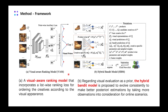In our paper, we present a novel framework to tackle this problem. There are two major components in our model. One is the visual-aware ranking model, which we call VAM. We present a novel convolutional network with a listwise ranking loss to select the most attractive creative. The learned representations are treated as contextual information for the bandit model. Regarding the visual features as a prior, the hybrid bandit model is proposed to make better posterior estimation by taking more observations into consideration.